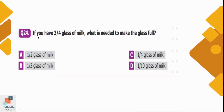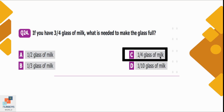Question number 24: If you have a 3/4 glass of milk, what is needed to make the glass full? Out of 4 parts, 3 parts are filled with milk, so 1 part is empty. We need 1/4 glass of milk to fill the glass. Option C is the correct option.